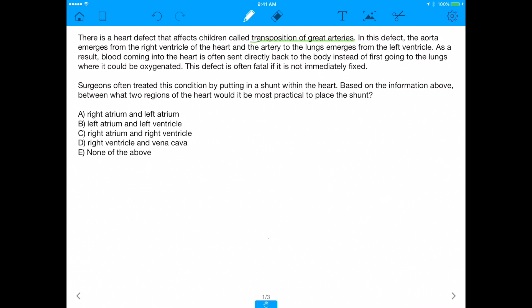There is a heart defect that affects children called transposition of great arteries. It's an actual defect. In this defect, the aorta emerges from the right ventricle of the heart and the artery to the lungs emerges from the left ventricle. As a result, blood coming into the heart is often sent directly back to the body instead of first going to the lungs where it can be oxygenated. This defect is often fatal if it is not immediately fixed.